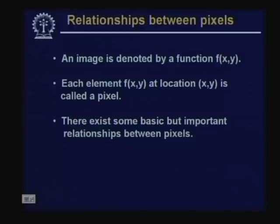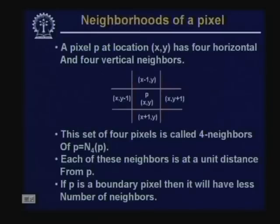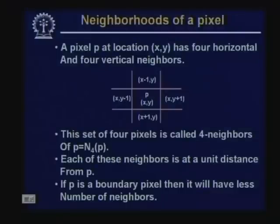The first relationship is the neighborhood relationship. Let us first try to understand what is meant by neighborhood. We say that the people around us are our neighbors — a person living in the house next to mine is my neighbor. So it is the closeness of different persons which forms the neighborhood. Similarly, in case of an image, we say that pixels are neighbors if they are very close to each other. Let us try to see formally what is meant by neighborhood in case of an image pixel.